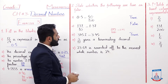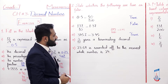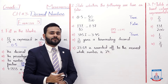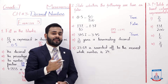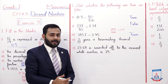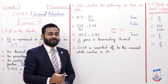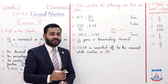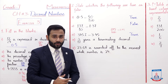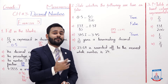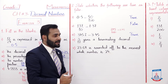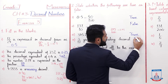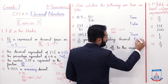The fourth statement: 3/17 gives a terminating decimal. Terminating decimal means a finite number of digits. But 3/17 does not have a finite number of digits — it is non-terminating — so this statement is False.